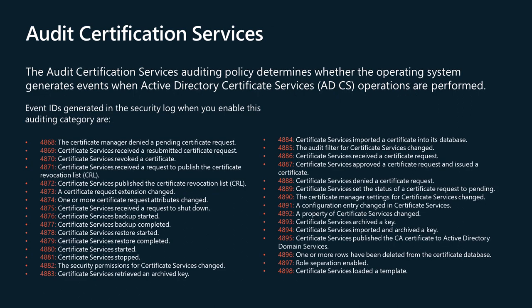The audit certification services auditing policy determines whether the operating system generates events when Active Directory Certificate Services, ADCS, operations are performed. Examples of ADCS operations include ADCS starts, shuts down, is backed up or is restored. Certificate revocation list, CRL, related tasks are performed. Certificates are requested, issued or revoked. Certificate manager settings for ADCS are changed.